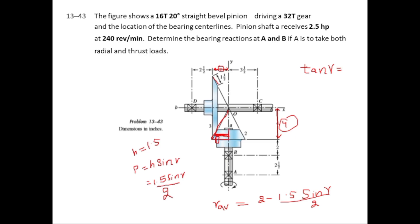To find gamma, we draw a right angle triangle with angle gamma, where the base is the radius of gear 3 and the perpendicular is the radius of the pinion. So tan(gamma) = 2/4, giving gamma = 26.565°. For capital gamma, tan(Γ) = 4/2, so gamma = 26.565° and capital gamma = 63.435°.